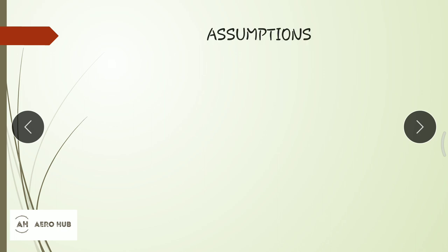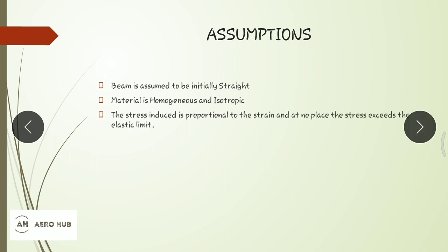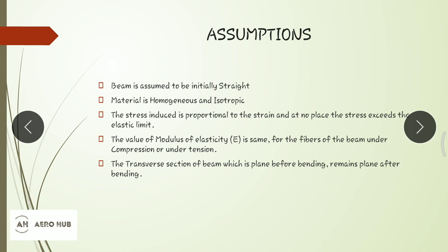Now we'll see the assumptions in this theory. First, the beam is assumed to be initially straight. Second, the material of the beam is homogeneous and isotropic — homogeneous means properties are the same at each and every point; isotropic means elastic properties are the same in every direction. Stress is proportional to strain and does not exceed the elastic limit. The value of Young's modulus is the same in compression and tension.